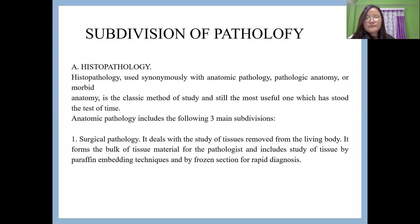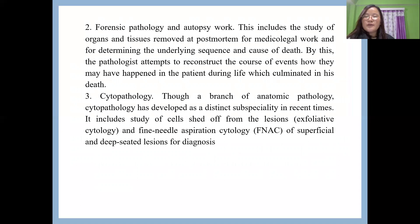In surgical pathology, different methods can be applied, such as the paraffin embedding technique or frozen sections for rapid diagnosis. The second division of histopathology is forensic pathology, or autopsy work, where tissue or organs are taken from a dead person through post mortem for medical legal work. That comes under the category of forensic pathology.